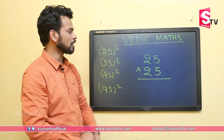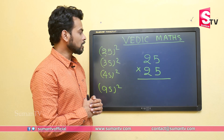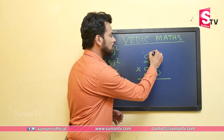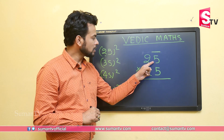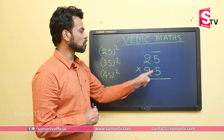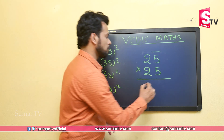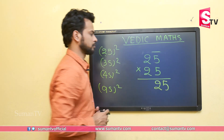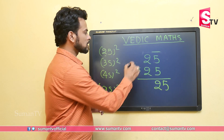So for 25 multiplied by 25, listen carefully — this is a very important trick. In the first step, we multiply the unit digit with the unit digit. Here the unit digit is 5, so we multiply 5 with 5 and get 25. We write this 25 fully.